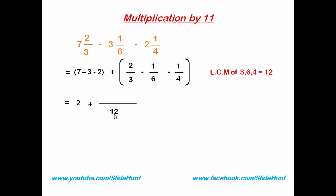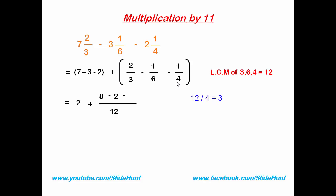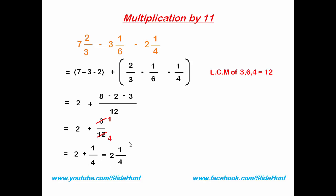So I'm going to write 12. Then: 12 divided by 3 is 4, and 4 times 2 is 8. Minus 12 divided by 6 is 2, and 2 times 1 is 2. Minus 12 divided by 4 is 3, and 3 times 1 is 3. Now subtract the numerators: 8 minus 2 is 6, and 6 minus 3 is 3. So we get 3 by 12. Reduce this fraction to its lowest form and we get 1 by 4. So the answer is 2 and 1/4.